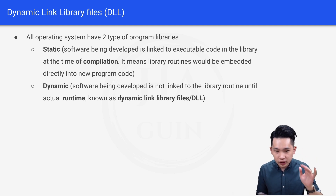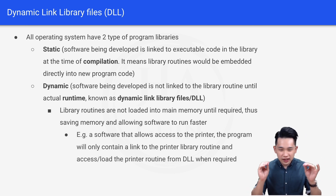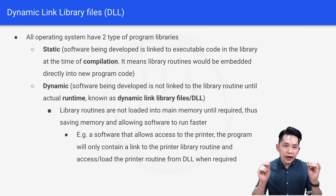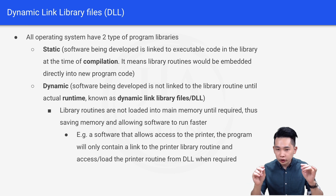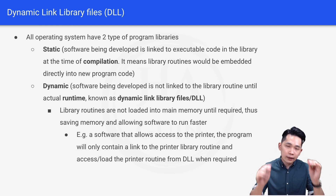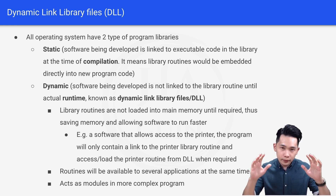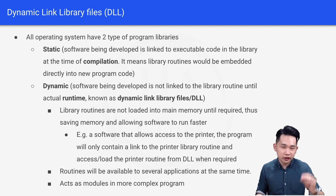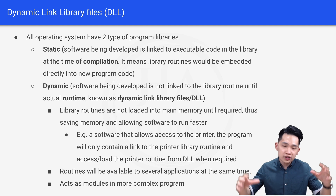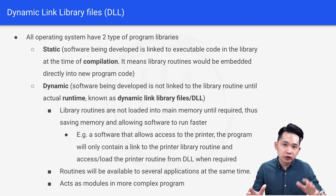The second type is dynamic, meaning the software is not linked to the library routine until actual runtime. This is also known as a dynamic link library file, or DLL. Library routines are not loaded into main memory until required, saving memory and allowing software to run faster. For example, a software that accesses a printer only contains a link to the printer library routine and loads it from the DLL when required. For static, you embed all code at compile time; for dynamic, you only load the routine at runtime when needed.